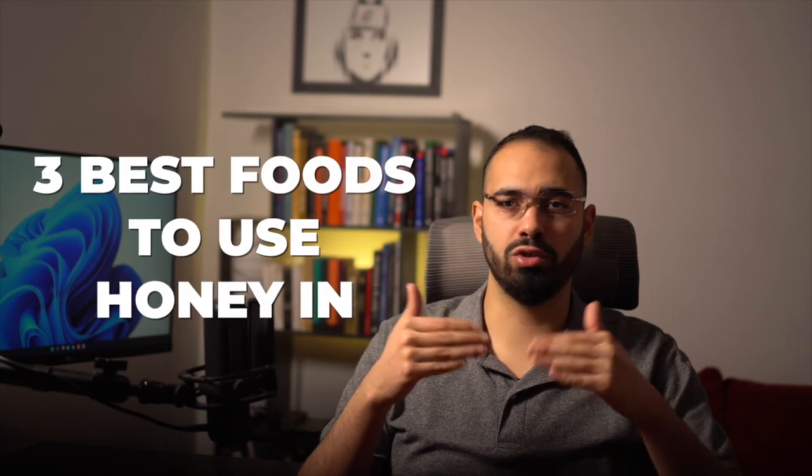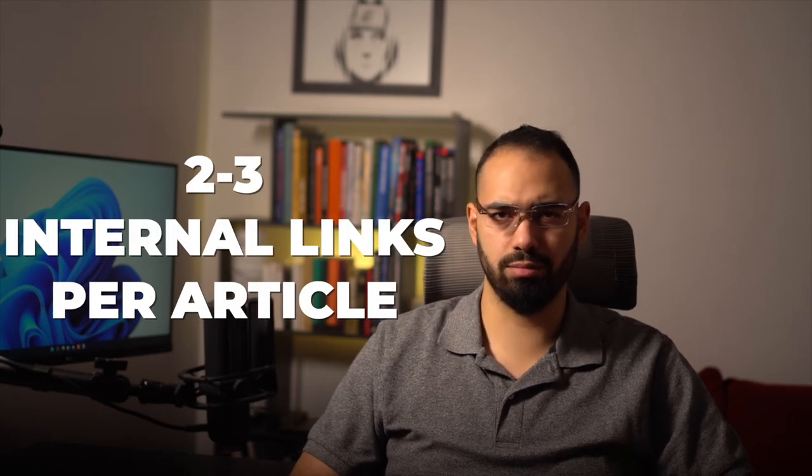So I have an article called benefits of honey, and I have another article called three best foods to use honey in. For example, in the intro or anywhere in the article, I could mention something like, oh, and by the way, check out where you can use honey and get these benefits in this article. And then you link to that other article, which is where to use honey, three things to use honey in. And so that's how you use internal links for an article that's about 500 words. You want to keep it to about two internal links, maybe three, but that's a lot.